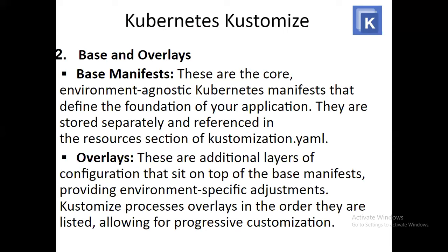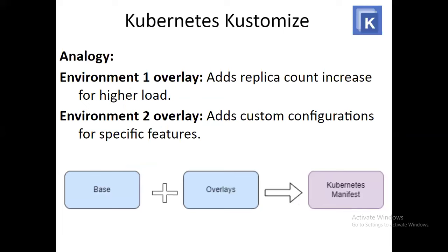The second key concept is base and overlays. Base manifests are core, environment-agnostic Kubernetes manifests that define the foundation of your application. They are stored separately and referenced in the resources section of the customization.yaml file. Overlays are additional layers of configuration that sit on top of the base manifests, providing environment-specific adjustments. Kustomize processes overlays in the order they are listed, allowing for progressive customization. For example, a first overlay can add increased replica counts for higher load, and a second overlay can add custom configurations for specific features. Base plus overlays equals the final Kubernetes manifest.